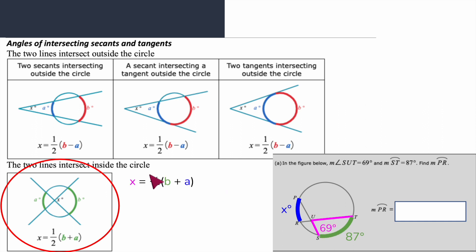69 degrees equals one half. I know my larger arc, and in this case it doesn't matter which one is larger or smaller because you're adding. That matters when subtracting but when adding it doesn't matter which direction I add in. So 87 plus X. Now I want to get rid of this one half, so I'm going to multiply by two on both sides.